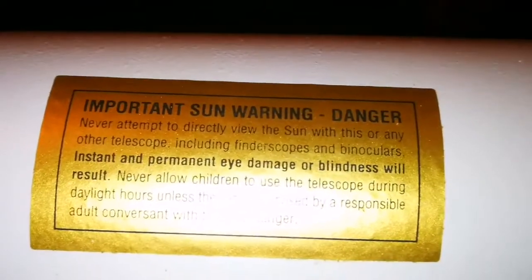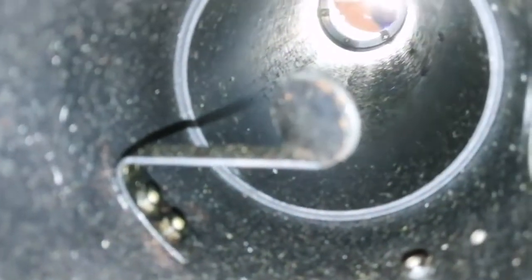There is the usual warning here. It's an important sun warning: Danger, never attempt to directly view the Sun. And let's see the mirror. That's the secondary mirror. What you see at the end is a primary mirror. Beautiful.